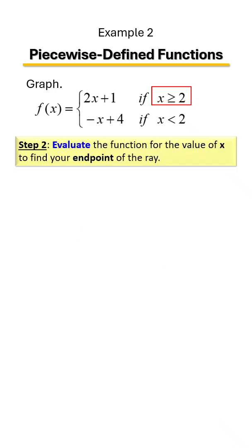To find your endpoint, you take the number there by x, this number here in the domain, and you plug it into that particular equation in x's place. So we're going to plug in 2 in that y equals 2x plus 1. So I'm going to remove the x and replace it with a 2.